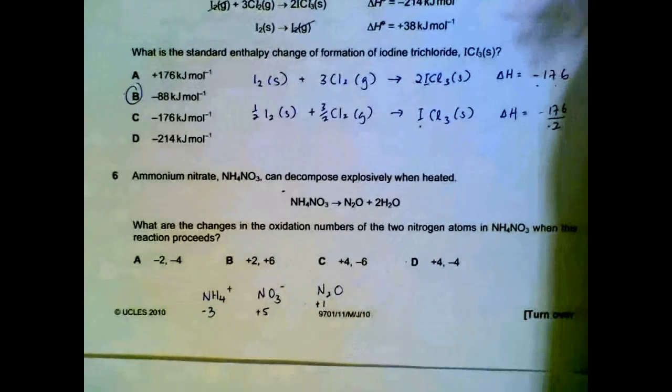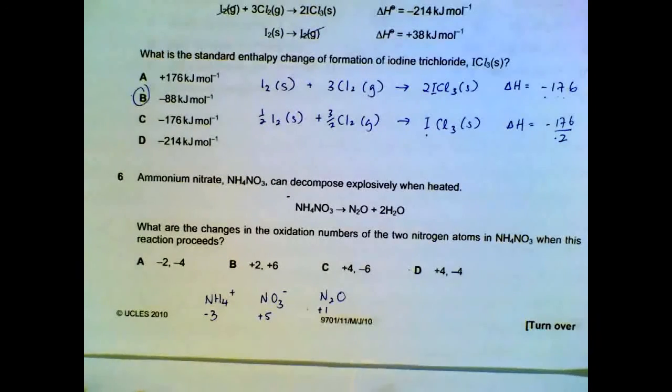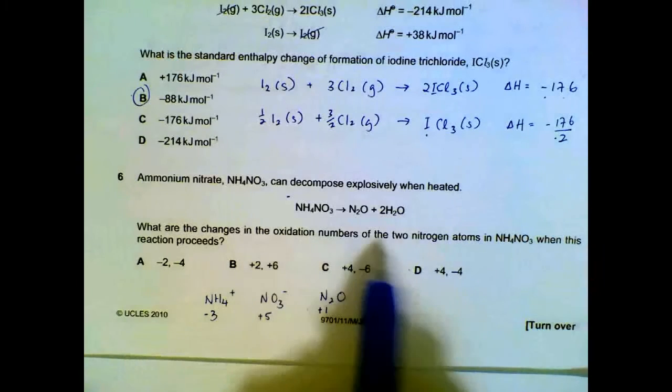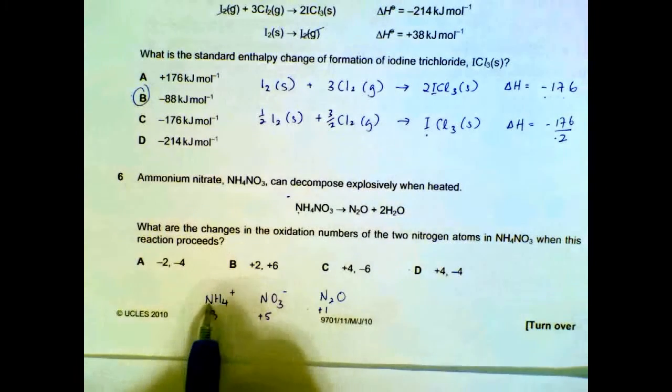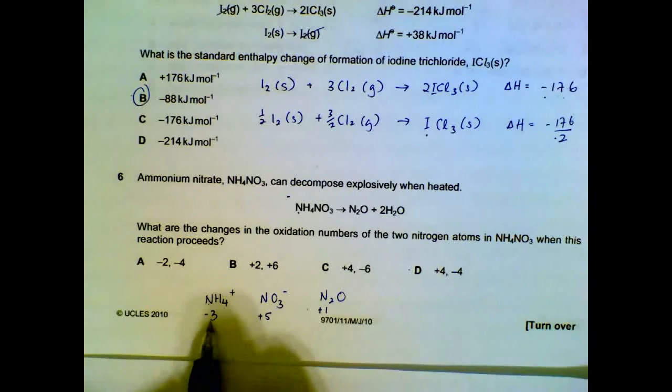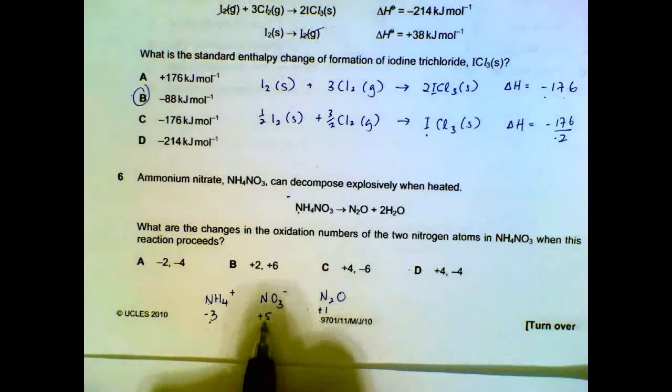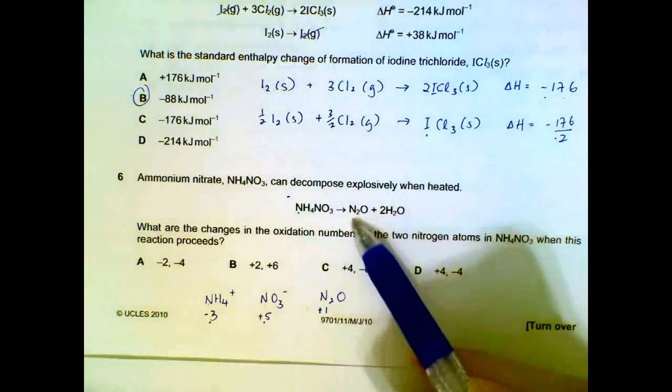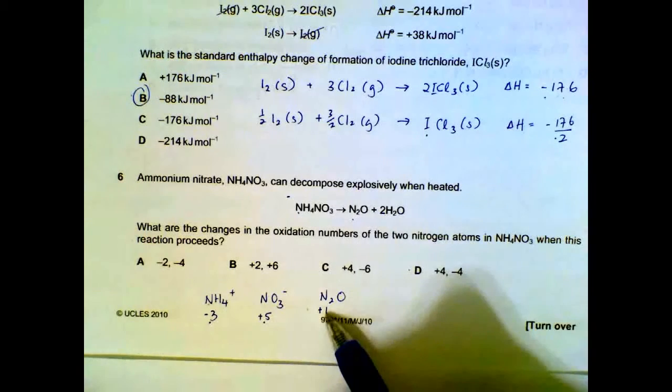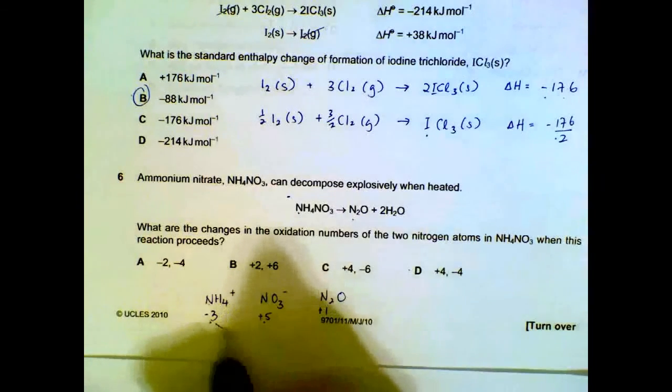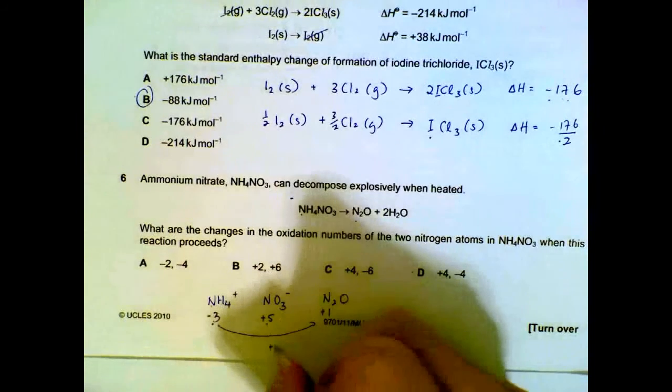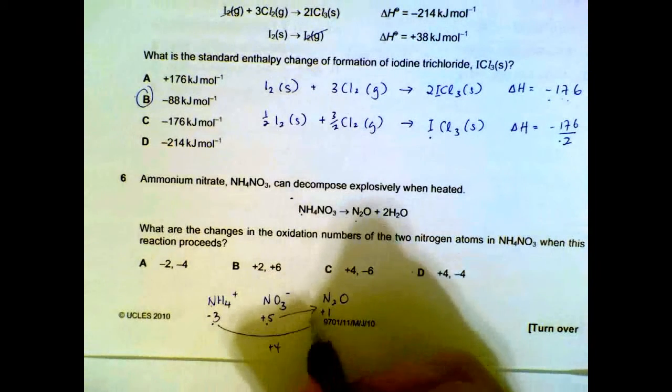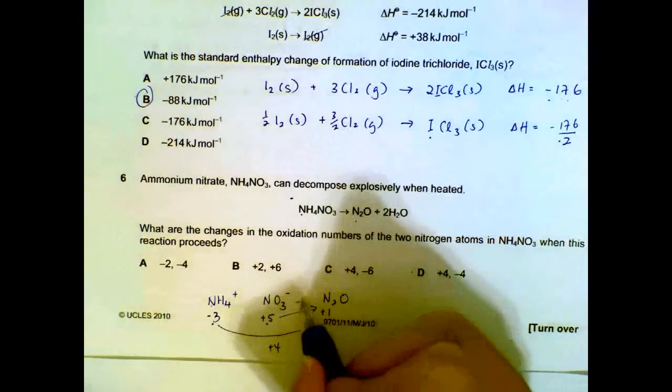Number six. Ammonium nitrate can decompose when heated. So, what are the changes in the two nitrogen atoms? We have nitrogen atom in ammonia, which is minus 3. The nitrogen atom in nitrate is plus 5. And then they form N2O, which is plus 1. So, the change from minus 3 to plus 1 increase by 4. From plus 5 to plus 1, it decreases by 4.